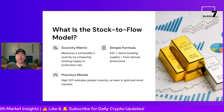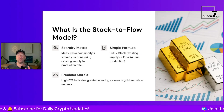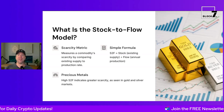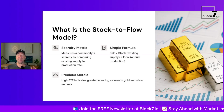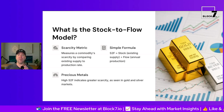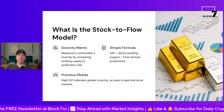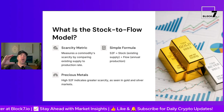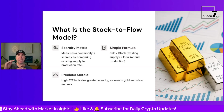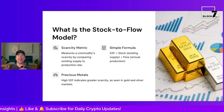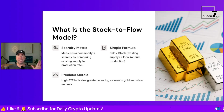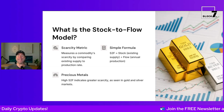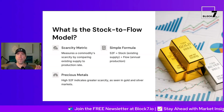There's a simple formula called S2F — stock to flow. It's calculated by taking the existing supply and dividing it by the flow, which is the annual production. In Bitcoin, this would be however many Bitcoins are mined in a year, divided by the flow. In gold and silver, a high S2F indicates great scarcity, and the same is true for Bitcoin.